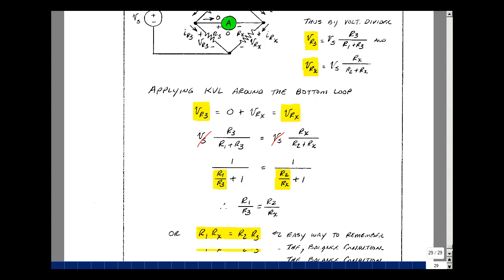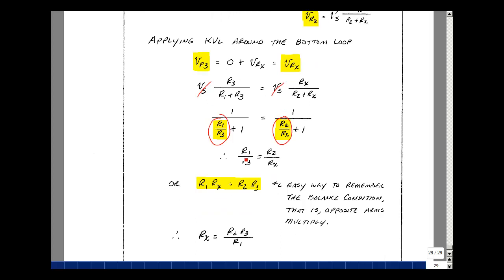Let's divide the numerator on the left hand side by R3 and the denominator. I get 1 divided by R1 divided by R3 plus R3 over R3, or 1. Do the same for the right hand side of the equation with R sub x, so 1 over R sub x is 1, R2 over R sub x, and R sub x over R sub x is 1. We can simplify this equation, throw away the 1s. If you cross multiply, you get R1 Rx equals R2 R3.